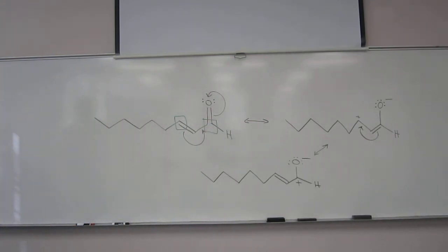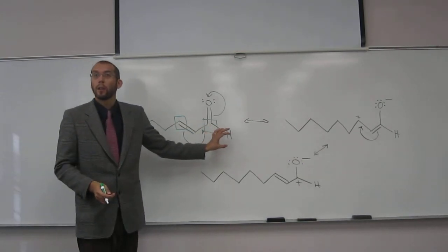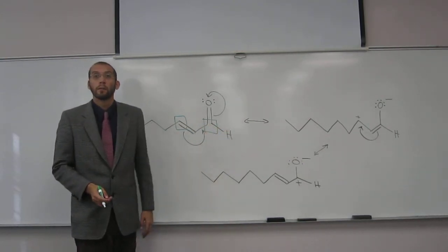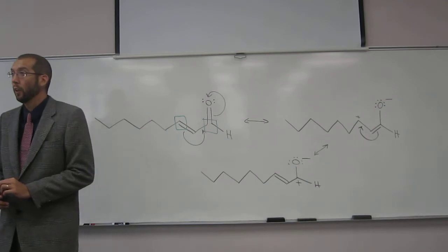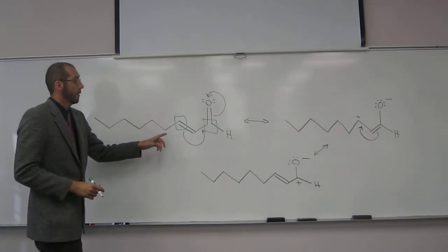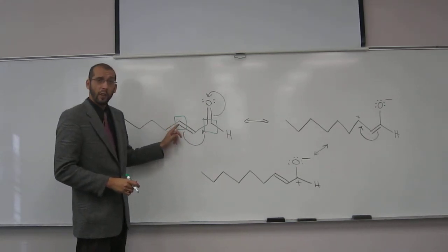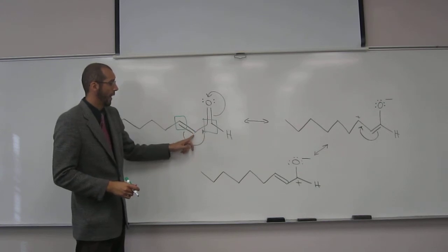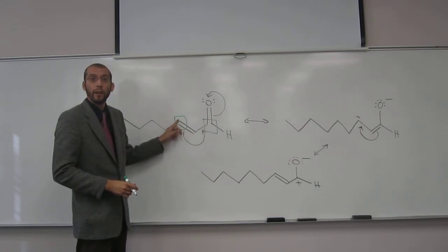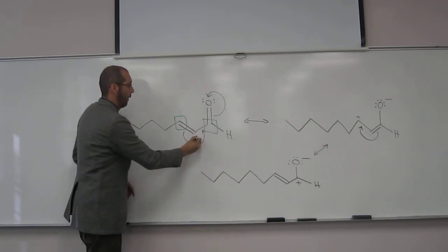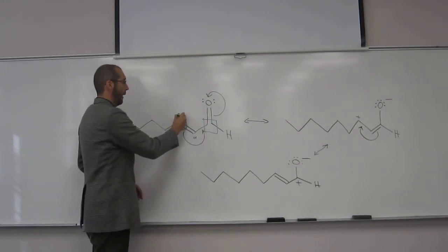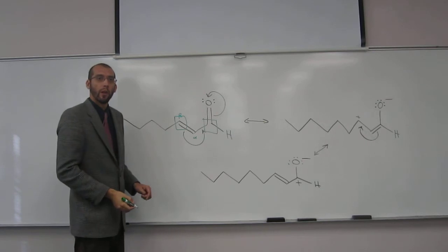So those are the two electrophilic centers. The thing you want to take away from this problem is that carbonyl carbons are electrophilic. Also, carbons that are - so this would be alpha, beta. Do you see that? Alpha from the carbonyl carbon - one carbon away. Beta from the carbonyl carbon - two carbons away.